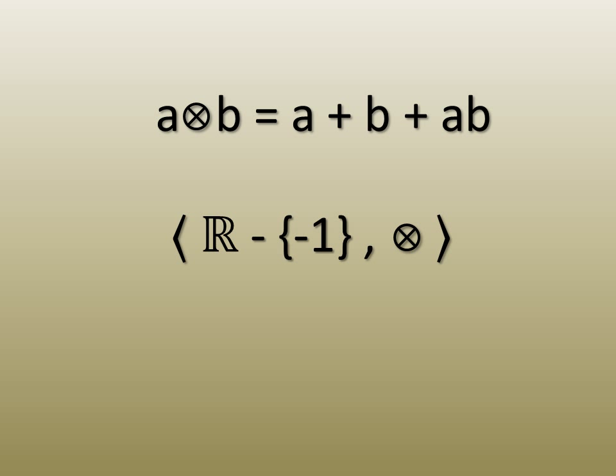In this last example of a group, a stranger but perfectly acceptable binary operation is considered. This operation takes two elements and adds their sum to their product. We give it a symbol and define it algebraically in this way. The underlying set, that is, the set which it takes A and B from, is the set of real numbers, excluding the number negative one. To prove that this algebraic structure is a group is not as straightforward as the previous two examples.